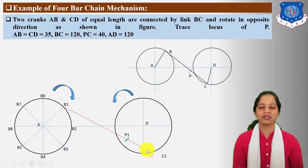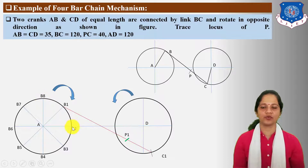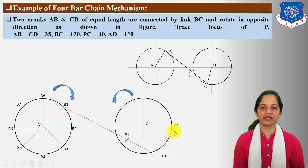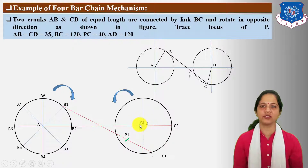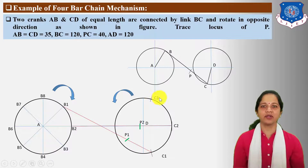Mark C1 point, connect B1C1, and locate locus point P1. The distance of P1 from C1 is given 40 mm. Next, take center B2 and C2, find out C2 point, connect B2C2, and locate P2 locus point. The distance of P2 from C2 is 4 cm. Next, take center B3, radius 12 cm, cut arc on this circle, and find out C3 point. Connect B3C3 and locate P3 locus point.